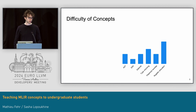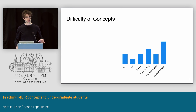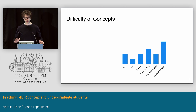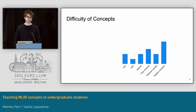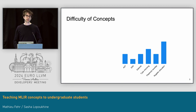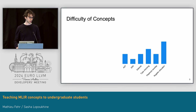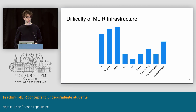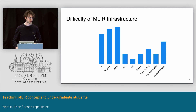When we were designing the course, we had a rough estimate of how difficult students would find each individual concept — AST, SSA, dialects, type checking, pattern rewrites, register allocation — probably a bit more difficult. One of the problems with MLIR was that it involves quite a lot of complex infrastructure needed for its own use case as a production compiler framework.